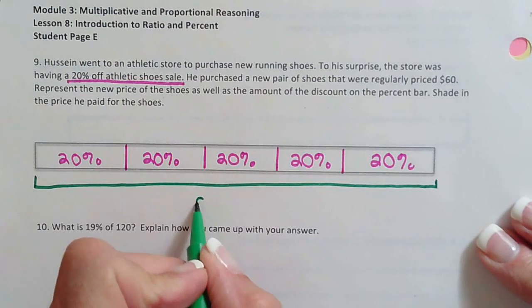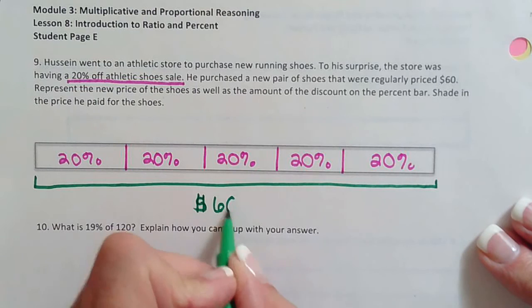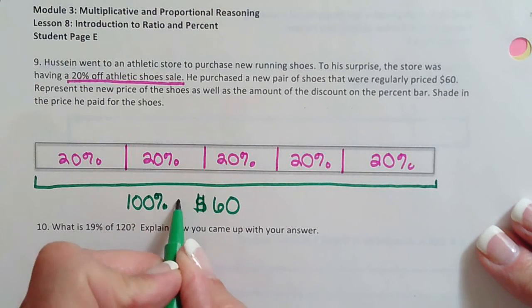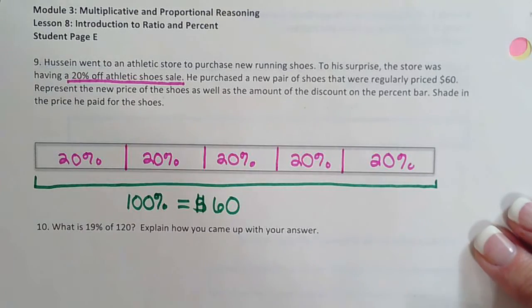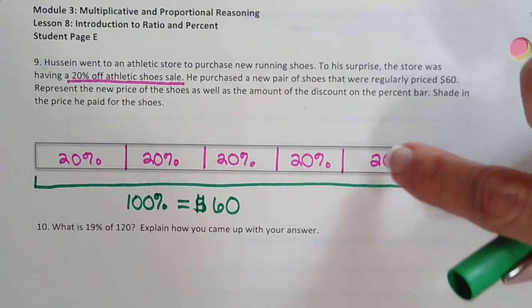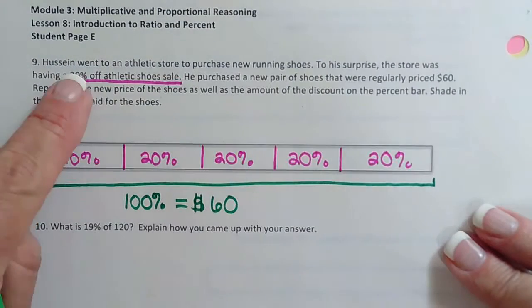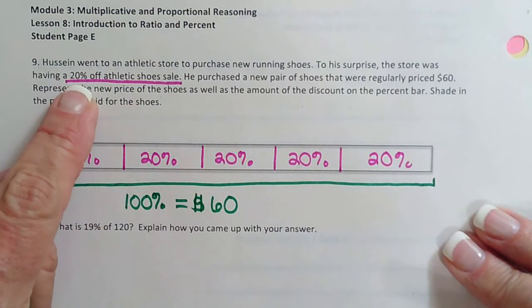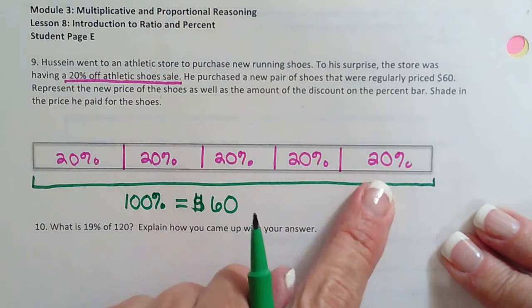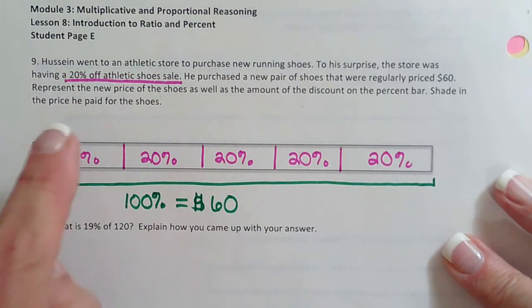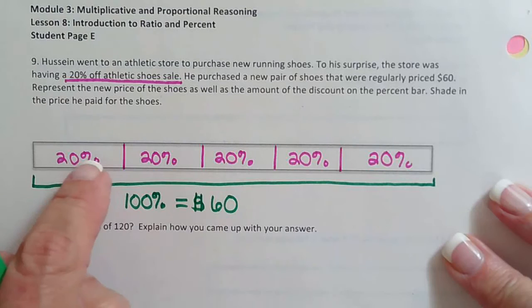Say yes. So this is what they were. So 100% of the price is $60. Well, I need to figure out what each of these are. And again, we picked 20 because of this. And in my head, I went 20 times 5 is 100. That's why there's 5 boxes. And you can see that adds to 100. So now I need to figure out what dollar amount each one is. Well, there's 5 boxes, so I can go 60 divided by 5.